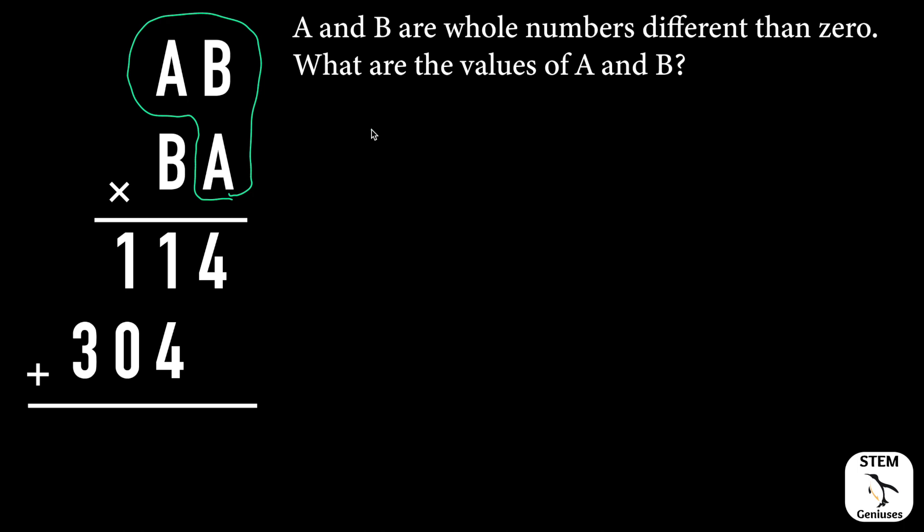So if I rewrite this, AB times A equals this number 114. And if I multiply B with AB, this time AB times B, it should give us the second product line. The line two number is 304.